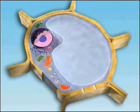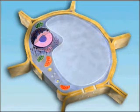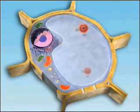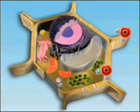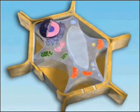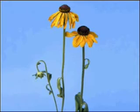However, if the extracellular concentration of solutes is greater than the solute concentration inside the cell, osmosis will result in loss of water to the outside and the cell will shrivel. The effects are very obvious because the plant wilts and becomes limp.